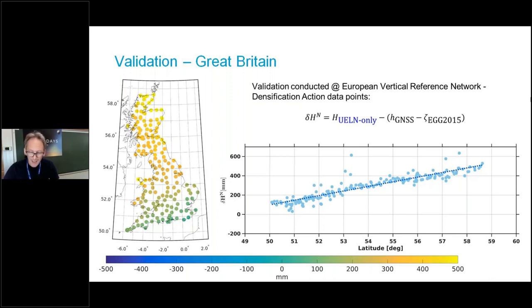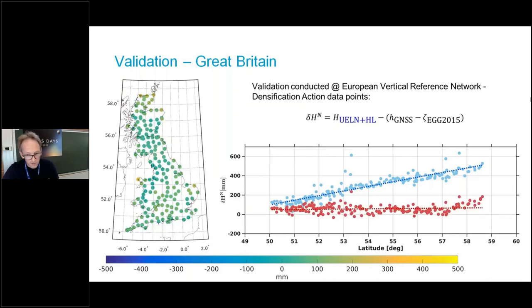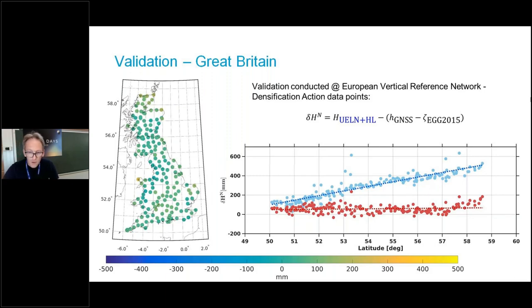But when we add our leveling connections, this was our result. By just adding a few leveling connections or by connecting the UK tide gauges to the European mainland, we basically got rid of this slope.